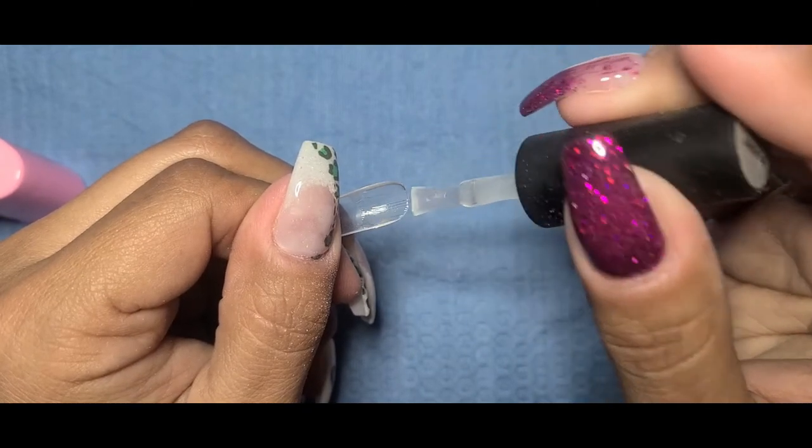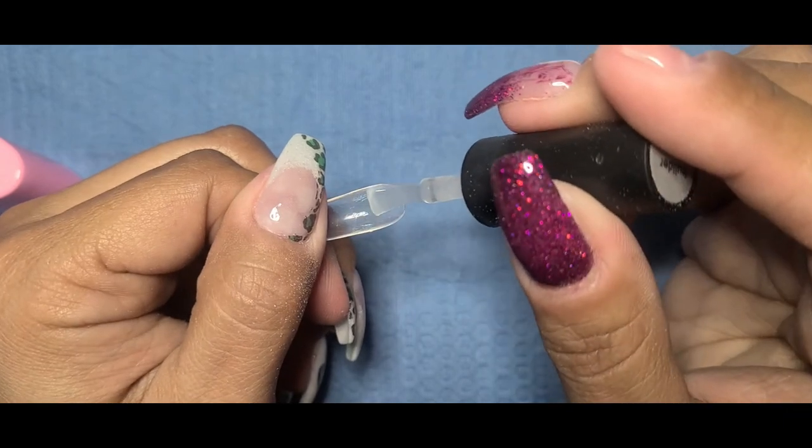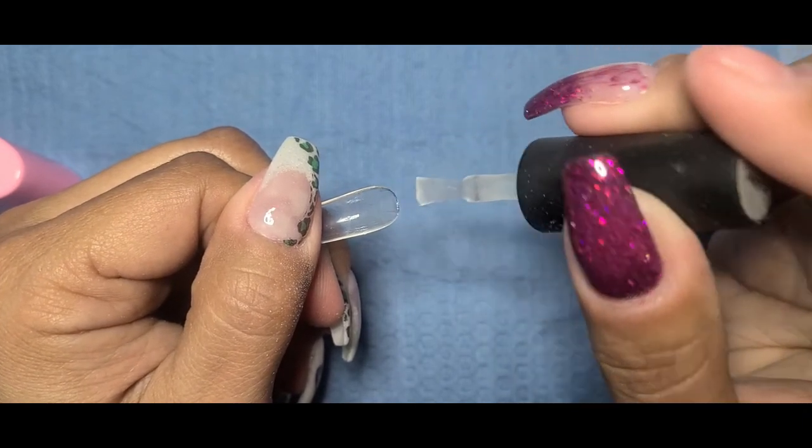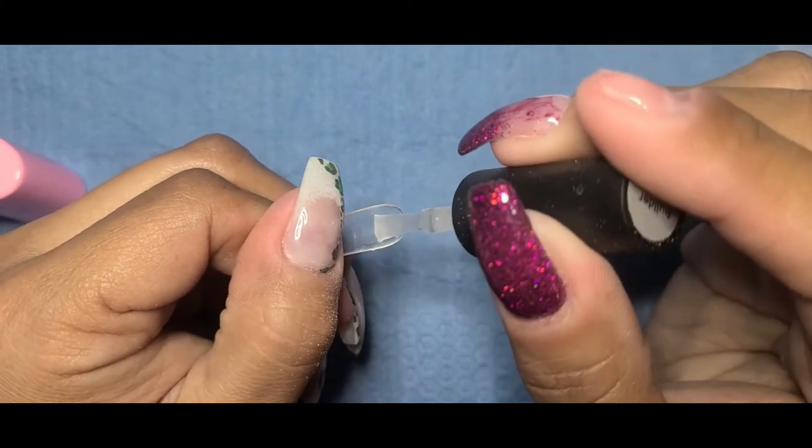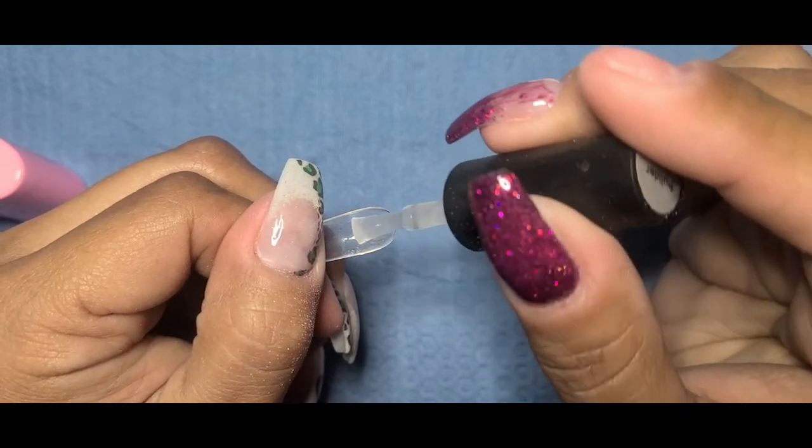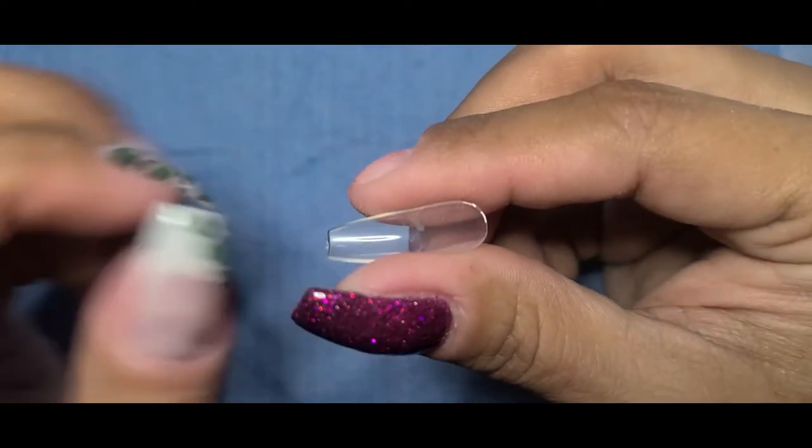You don't want to do too much because then you have to deal with seepage around your cuticle line and your sidewalls and also at the tip of your natural finger as well. You know, you want to avoid getting gel products on your skin if at all possible. So you just want to do a super thin layer and what this does is it's going to act like a filler.